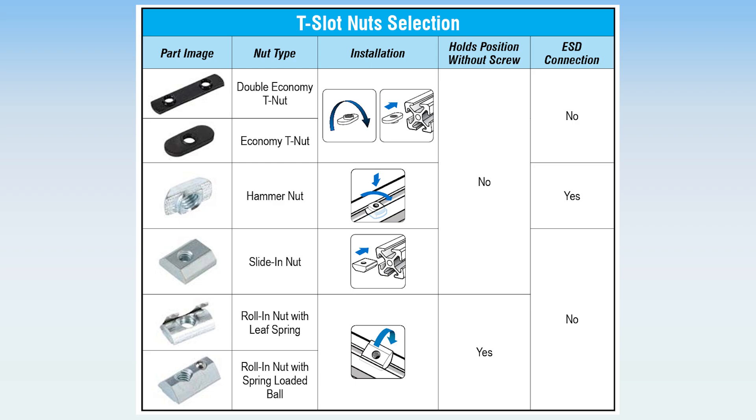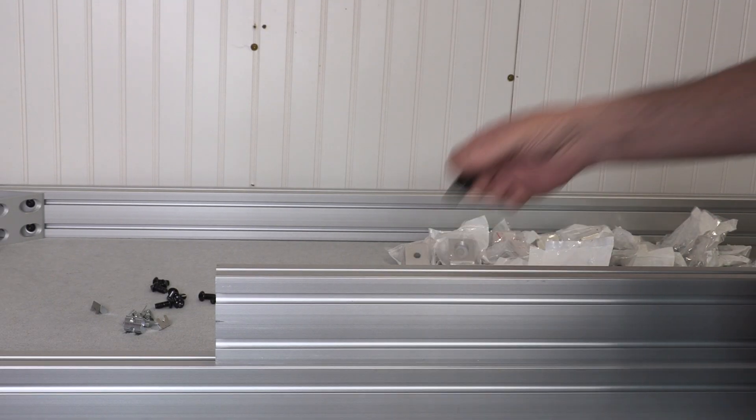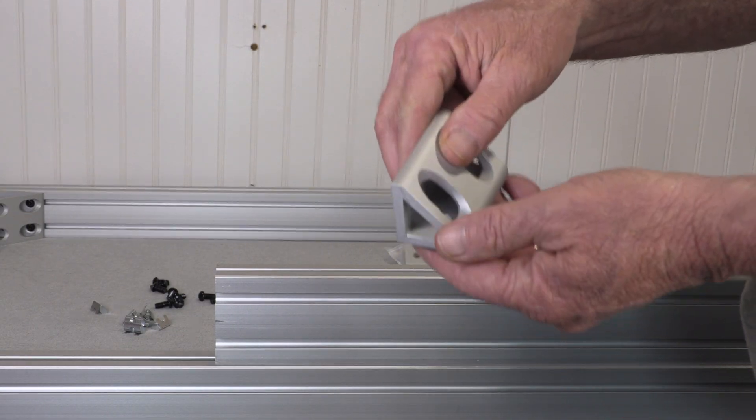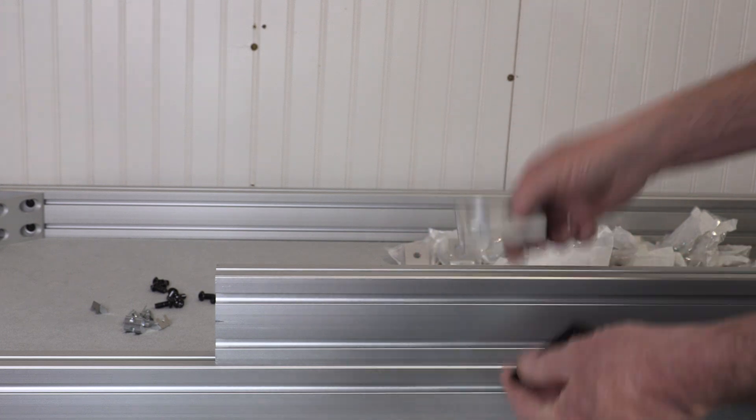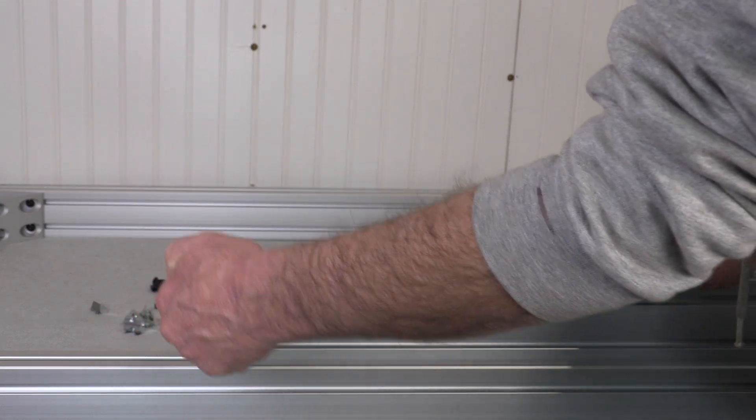Before we get into the build, let's take a look at the various nuts I used and what's available. These are called double economy nuts and are one of the least expensive options. The issue with these as you can see is they slide freely.